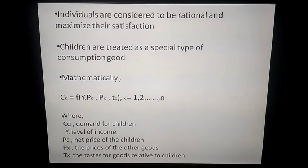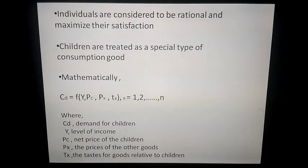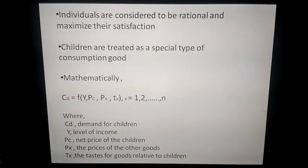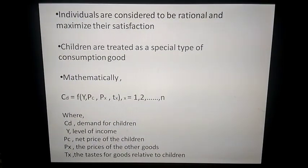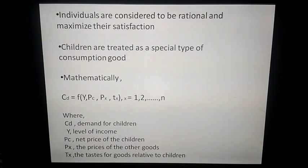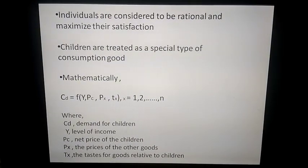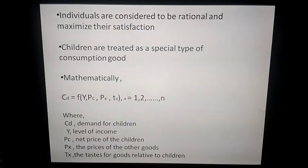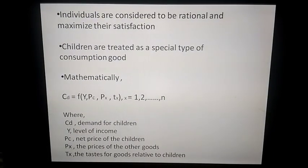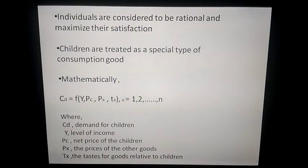The demand for children is considered to be a function of: the income of the family; the net price of children, which is the difference between the cost of having children — that is, the mother's time which she could have used in earning money — and the benefit derived from having children, such as children's income and old age support; the price of other goods; and the taste for goods relative to children.